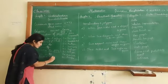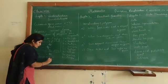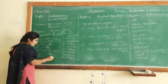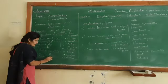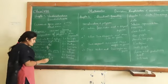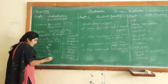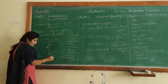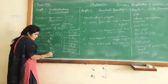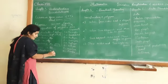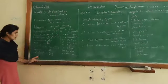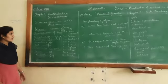Rectangle: it has four sides where opposite sides are equal and parallel. The diagonals bisect each other and the lengths of the diagonals are equal. All angles in a rectangle are individually 90 degrees. These are the properties of a rectangle.